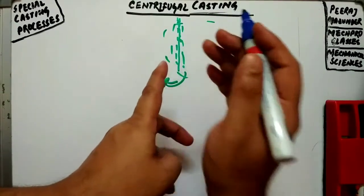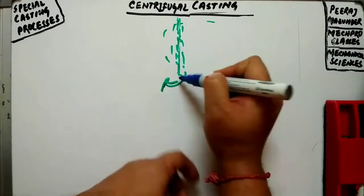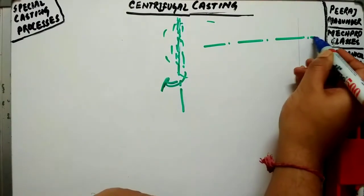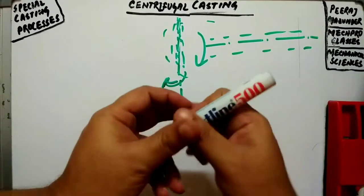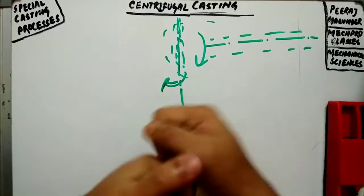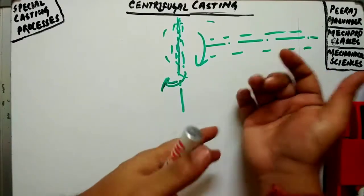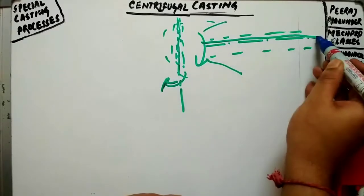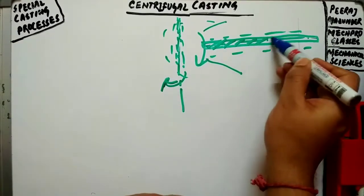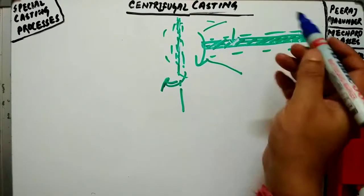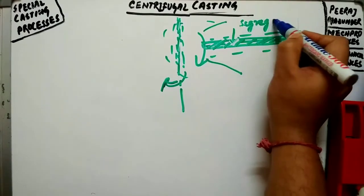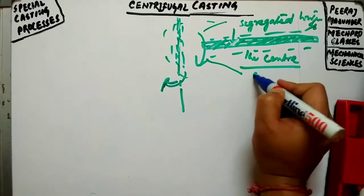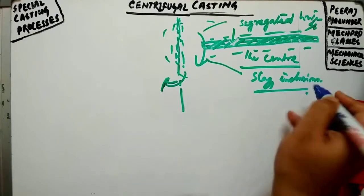Here the mold is rotated about its central axis, which can be vertical or horizontal. As metal is poured in, because of the centrifugal force, continuous pressure acts on the metal as it solidifies. The slag, oxides, and other inclusions, being lighter, get separated from the metal and segregate towards the center. This is a very important MCQ point for competitive examinations.